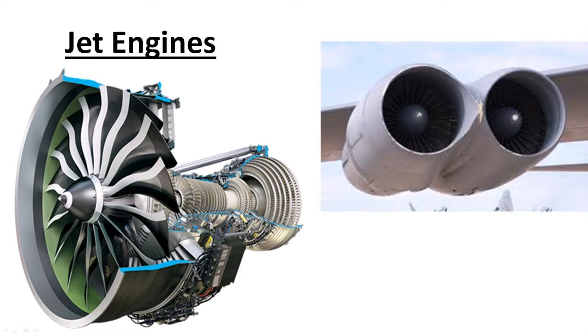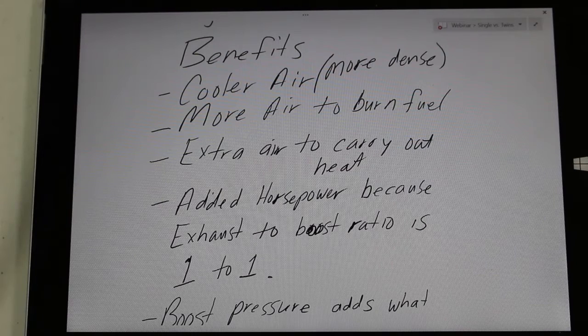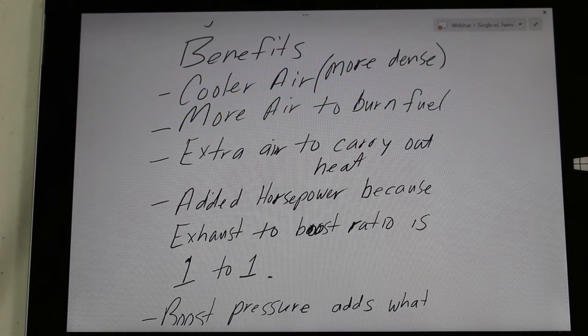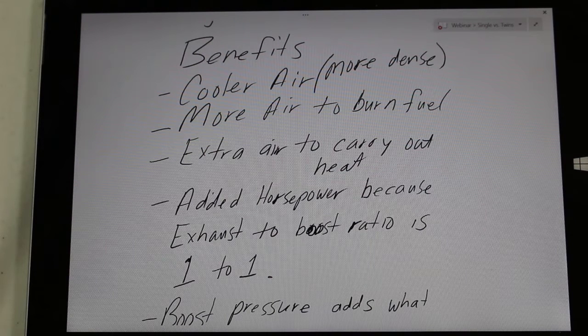This is the exact process that jet engines use to keep their exhaust streams cool. They call it a bypass ratio, and the jet engines use that bypass ratio to carry heat out of the exhaust stream so that they don't melt the internals on their jet engine.